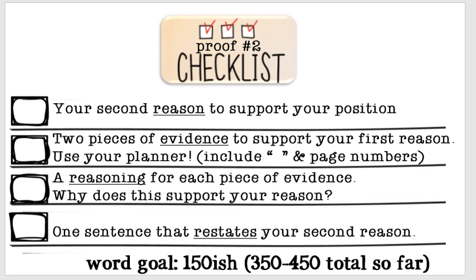After you've stated your second reason that supports your position, you need to find two pieces of evidence to support that second reason. Again, use your planner. Make sure you include quotation marks and the page numbers, which can also be found on that planner in those colored boxes.